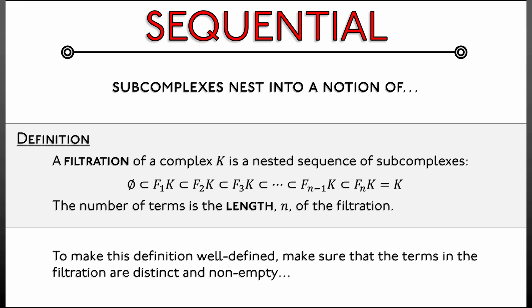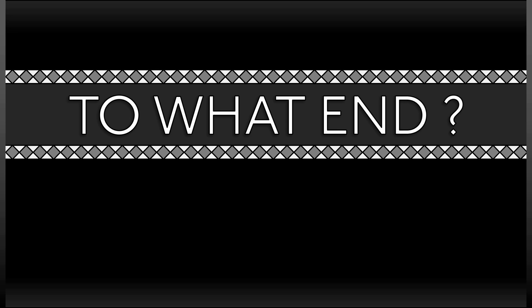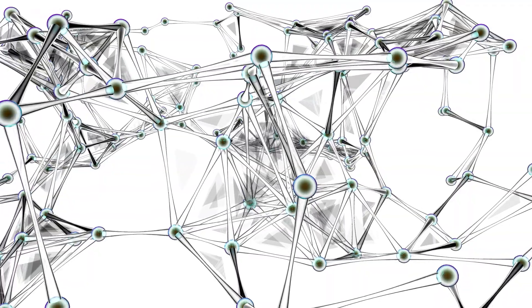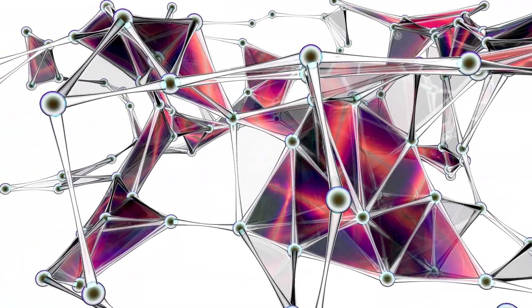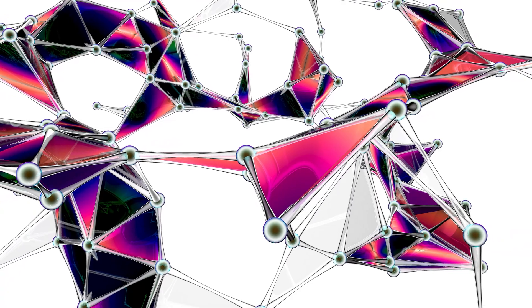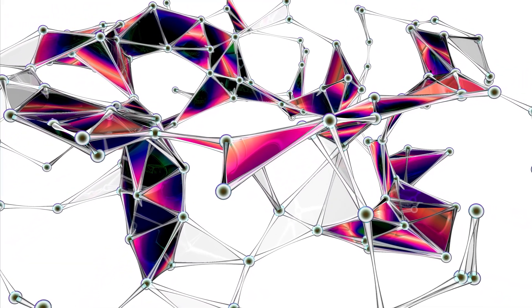The first term F₁ is non-empty and the last term Fₙ is all of K, giving a well-defined notion of length. One filtration absolutely essential in topology is the filtration of a complex by skeleton: the zero-skeleton sits inside the one-skeleton, which sits inside the two-skeleton, all the way up to the top-dimensional skeleton. That is a very important filtration for any finite-dimensional simplicial complex.